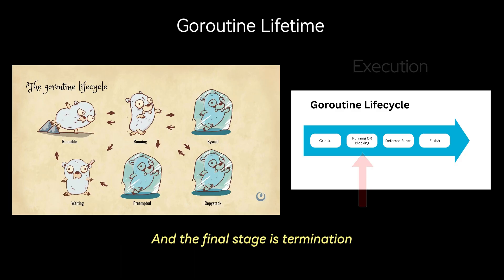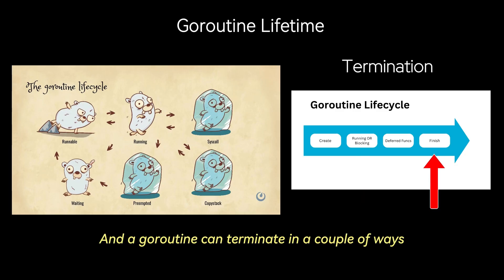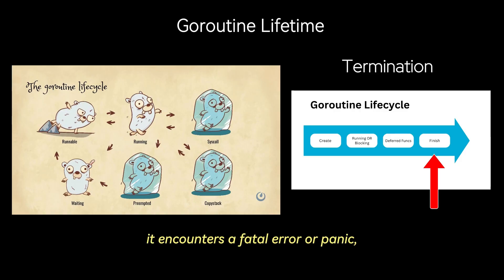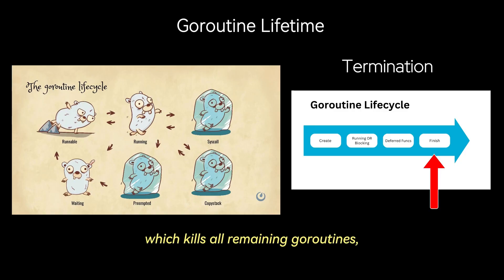The final stage is termination. A goroutine can terminate in a couple of ways: the function it executes returns, it encounters a fatal error or panic, the main function exits which kills all remaining goroutines, or it is explicitly canceled using context.Context.